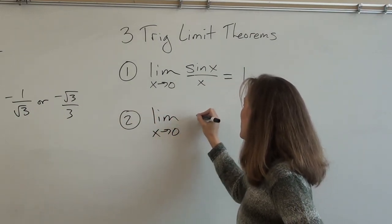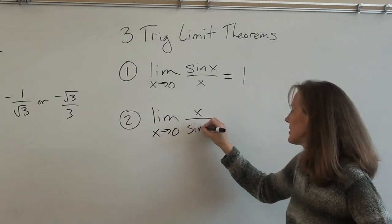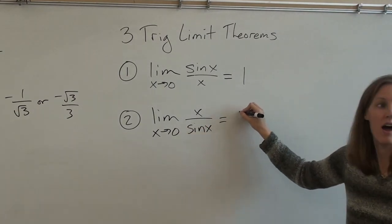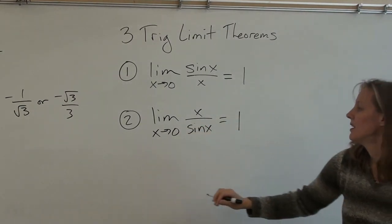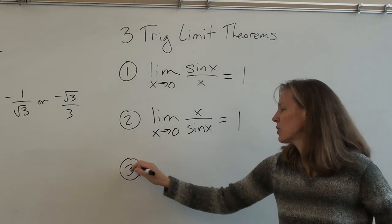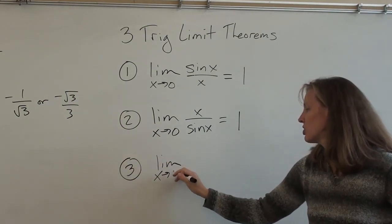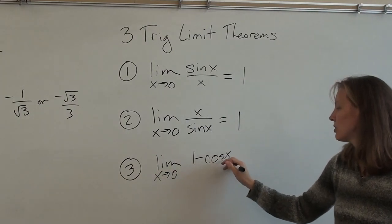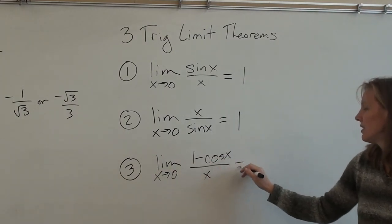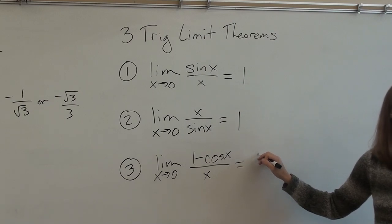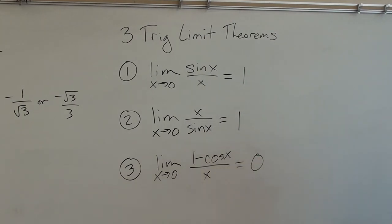Limit as x approaches 0 of x over sin(x) also equals 1. And trig limit theorem number 3, the limit as x approaches 0 of 1 minus cos(x) over x equals 0. We are one off. Yep. We were close.